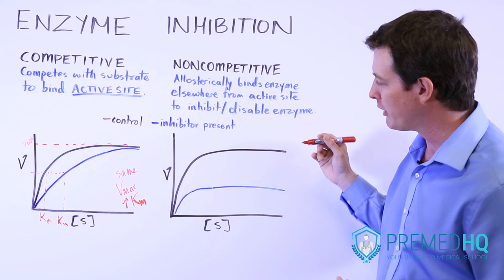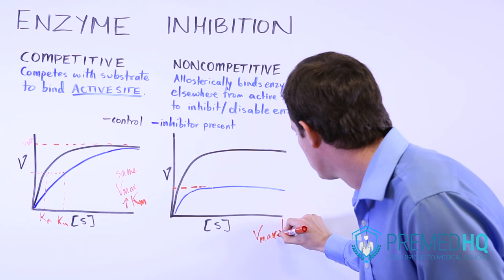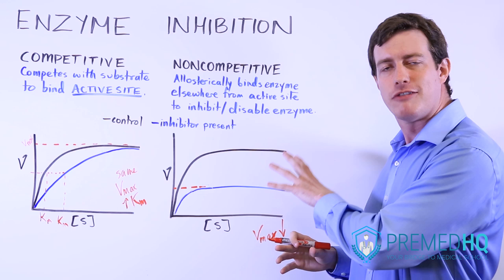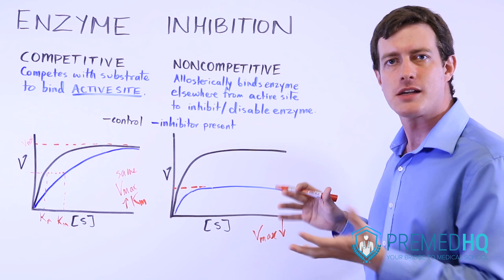With non-competitive inhibition, the Vmax goes down. That's a very important point because the non-competitive inhibitor makes previously functional enzymes no longer functional. If you have fewer functional enzymes, you're not going to see the same rate levels because you just don't have as many enzymes there to catalyze the reaction. So Vmax will decrease with non-competitive inhibition.